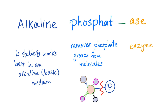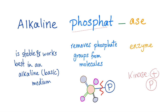Phosphatase is an enzyme that removes a phosphate group from molecules. It's called alkaline because this enzyme is stable and works best in an alkaline medium. This is different from a kinase, which adds a phosphate group — phosphatase removes a phosphate group, but kinase adds a phosphate group.